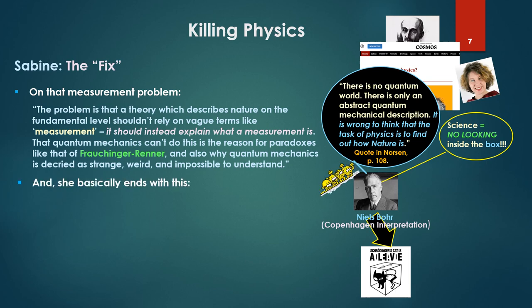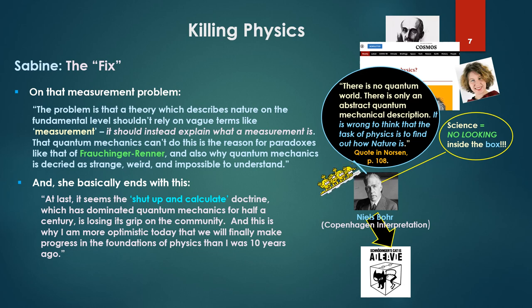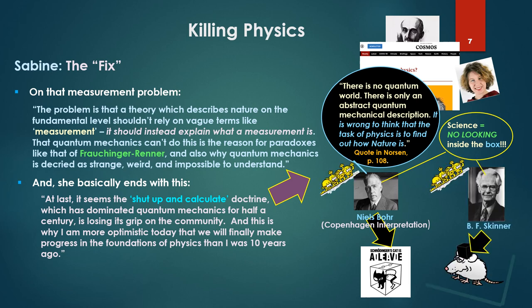Now, the quantum mechanics can't do this is the reason for paradoxes, like that of the Frauchiger-Renner, which we just noted, and also why quantum mechanics is decried as strange, weird and impossible to understand. And she basically ends with this. At last, it seems the shut up and calculate doctrine, which is basically the Niels Bohr Copenhagen interpretation, which basically comes down to science is no looking inside the box, whether it be the black box of Schrodinger or, as we see, it's very reminiscent of Skinner and behaviorism - no looking inside the box of the brain. Strange resonance. But to continue that quote, the shut up and calculate doctrine, which has dominated quantum mechanics for half a century, is losing its grip on the community. And this is why I am more optimistic today that we will finally make progress in the foundations of physics than I was 10 years ago. I'm not optimistic.